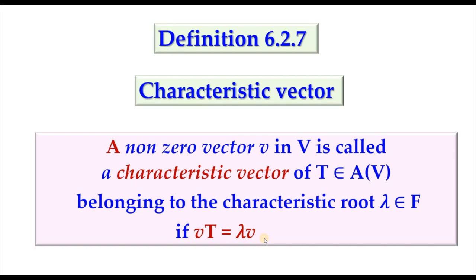We must notice that it is 'a' characteristic vector, not 'the' characteristic vector, because corresponding to one lambda (a characteristic root) we can have a number of characteristic vectors. Also, it should be a nonzero vector — zero cannot be a characteristic vector.